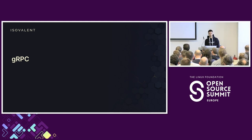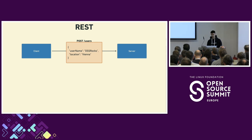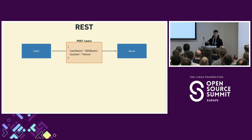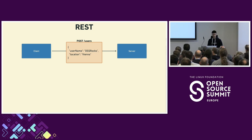Let's talk about gRPC. Usually what people think about when we say an API is a REST API — very simple, you have a client and a server. The client reaches out to the server and sends data, typically an HTTP POST request to something like slash users, sending some JSON alongside it. The JSON may be something like username, OSS rocks, and location Vienna. The server gets the JSON, and since it's a POST, it creates a new user.